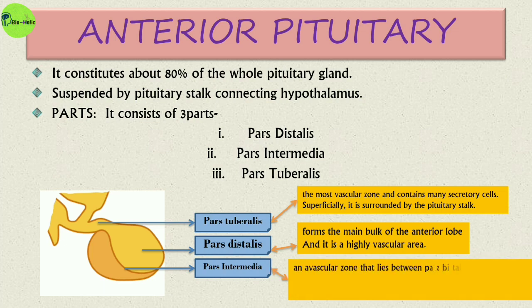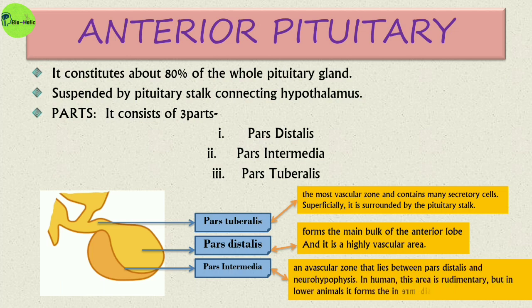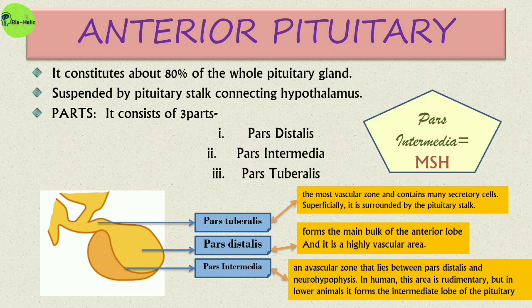The pars intermedia is an avascular zone. In humans this area is rudimentary, but in lower animals it forms the intermediate lobe of the pituitary. In humans, melanocyte-stimulating hormone (MSH) is secreted from this pars intermedia — that is why MSH is also known as the intermediate lobe hormone of the pituitary.